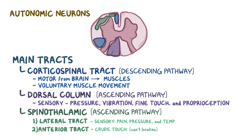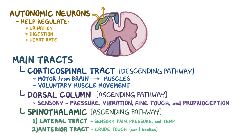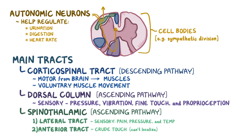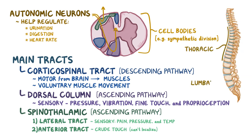Autonomic neurons are also located in the spinal cord, and these help regulate processes like urination, digestion, and heart rate. These neurons hitch a ride with the various tracts, but their cell bodies are found in the spinal cord. For example, the sympathetic division, or the fight response, has its cell bodies in the thoracic and lumbar regions and makes up the lateral horns of the gray matter.